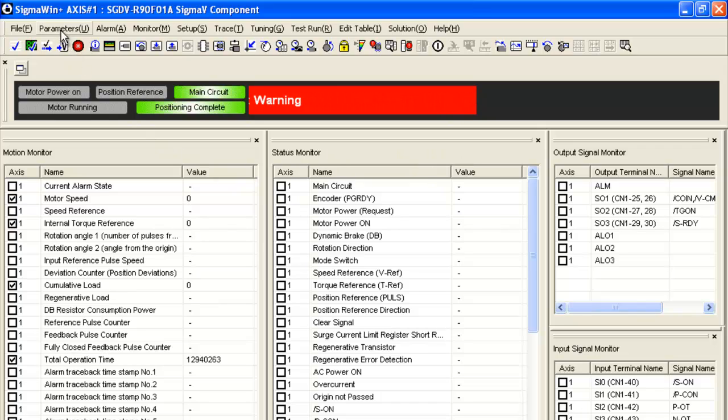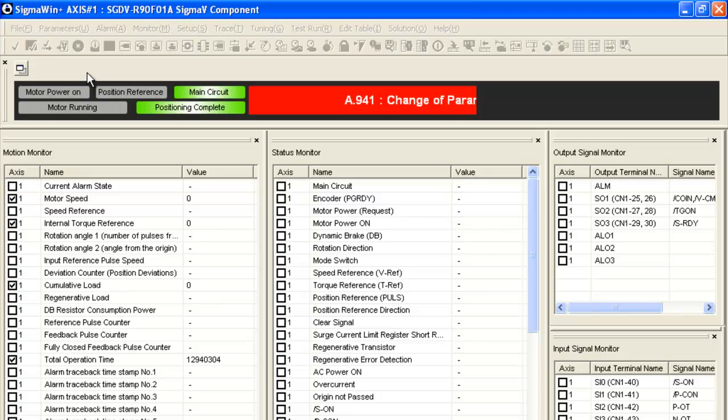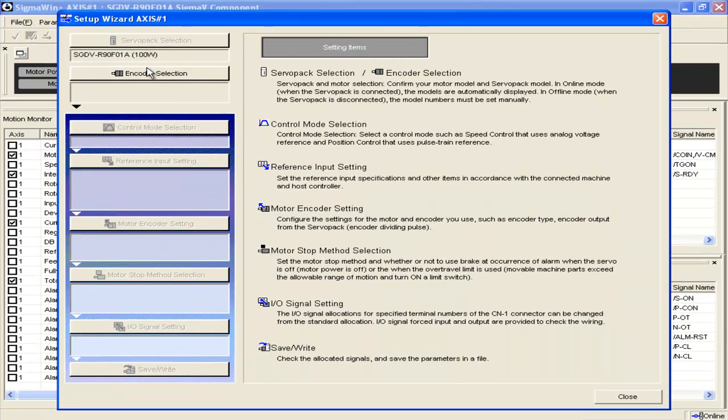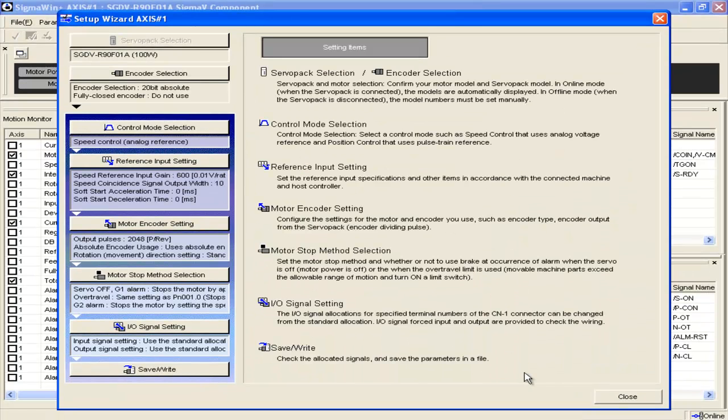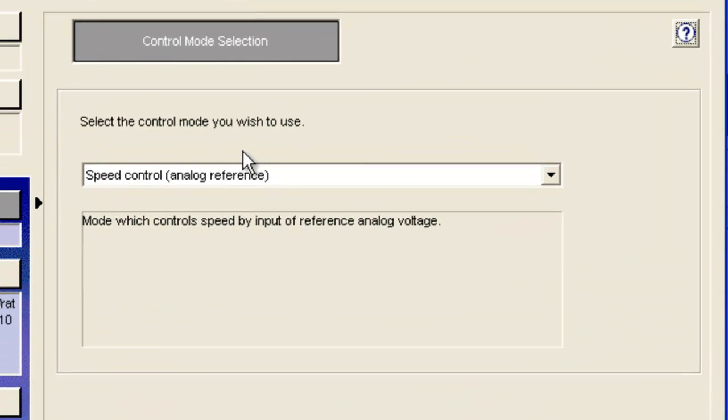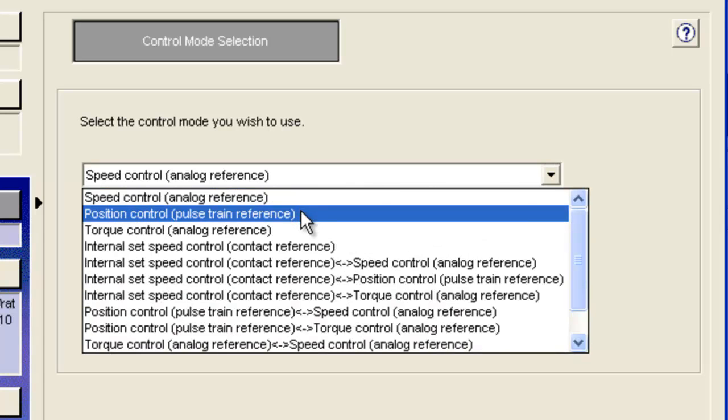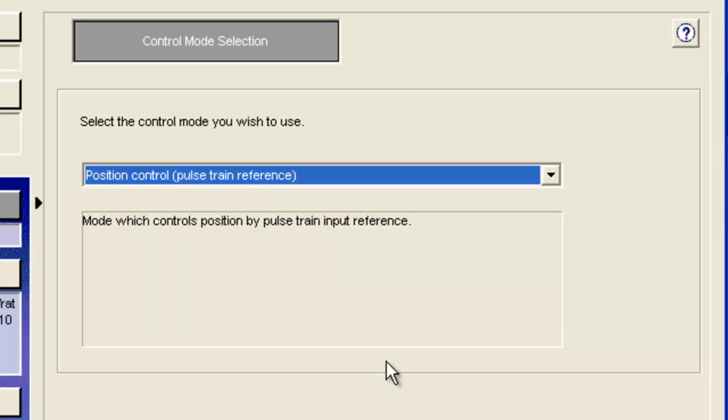So now let's start the wizard by going to setup wizard under the parameter menu. And the first step is always to do this apply to not using the fully closed encoder. Under control mode, I select position control, the pulse train reference, and hit apply.